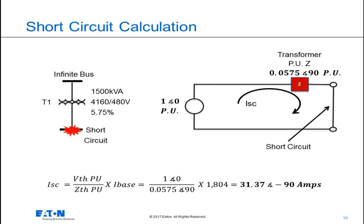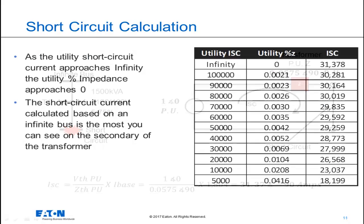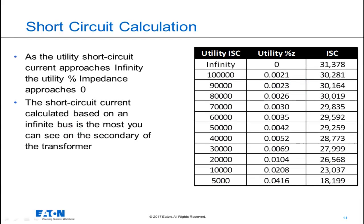The infinite bus short circuit current is calculated to be 31,370 amps. So this is a nice table as it gives us some more insight to short circuit current at the secondary of the transformer.